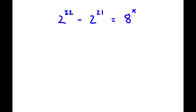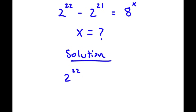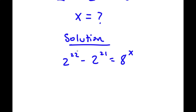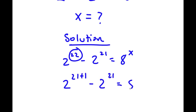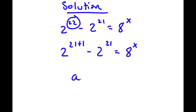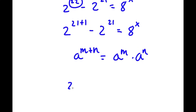In this problem, I have 2 to the power of 22 minus 2 to the power of 21 is equal to 8 to the power of x. At first glance this looks complicated, but it's actually easier than you might think. I'm solving for the value of x. Now, 22 is the same thing as 21 plus 1. So I'm going to rewrite this as 2 to the power of (21 plus 1) minus 2 to the power of 21 is equal to 8 to the power of x. Since a to the power of (m plus n) equals a to the power of m times a to the power of n, I can rewrite 2 to the power of (21 plus 1) as 2 to the power of 21 times 2 to the power of 1. And I still have minus 2 to the power of 21 is equal to 8 to the power of x.